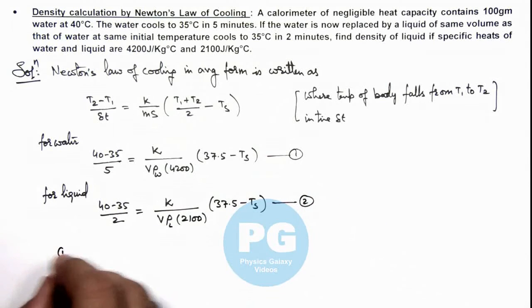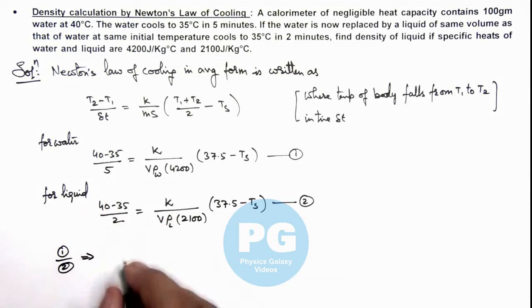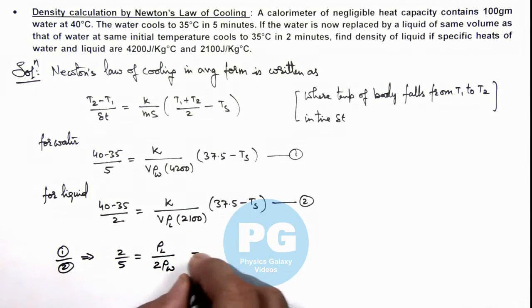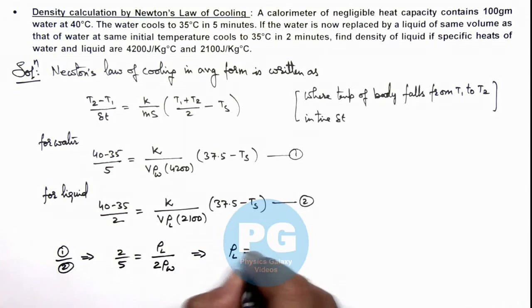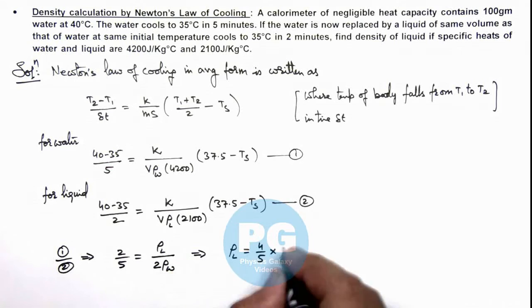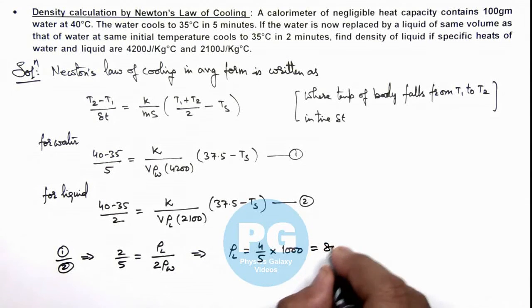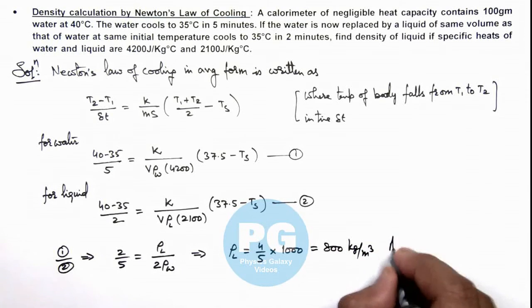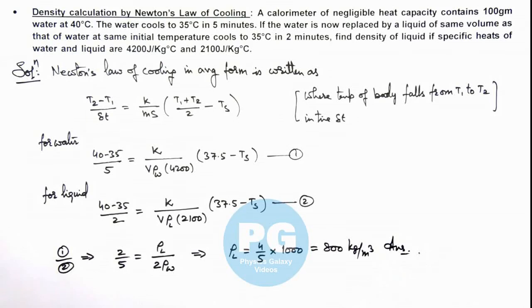Now here, if we divide the two equations you can see this will result as 2 by 5 is equal to rho of liquid upon twice the rho of water, which will result as the rho of liquid is equal to 4 by 5 times the density of water which is taken as 1000. So this is 800 kilograms per meter cube. We are getting the density of liquid - that is the result of this problem.